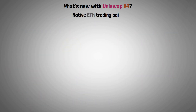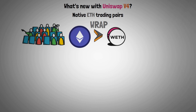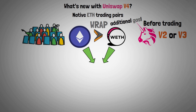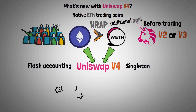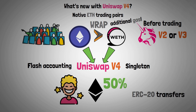Native ETH trading pairs. The majority of users must wrap their ETH to WETH before trading on the Uniswap protocol using V2 or V3, which uses additional gas. WETH and ETH pairs can now be traded on Uniswap V4, thanks to the addition of Singleton and Flash Accounting. Users benefit from this because native Ether transfers cost about half as much gas as ERC-20 transfers do.